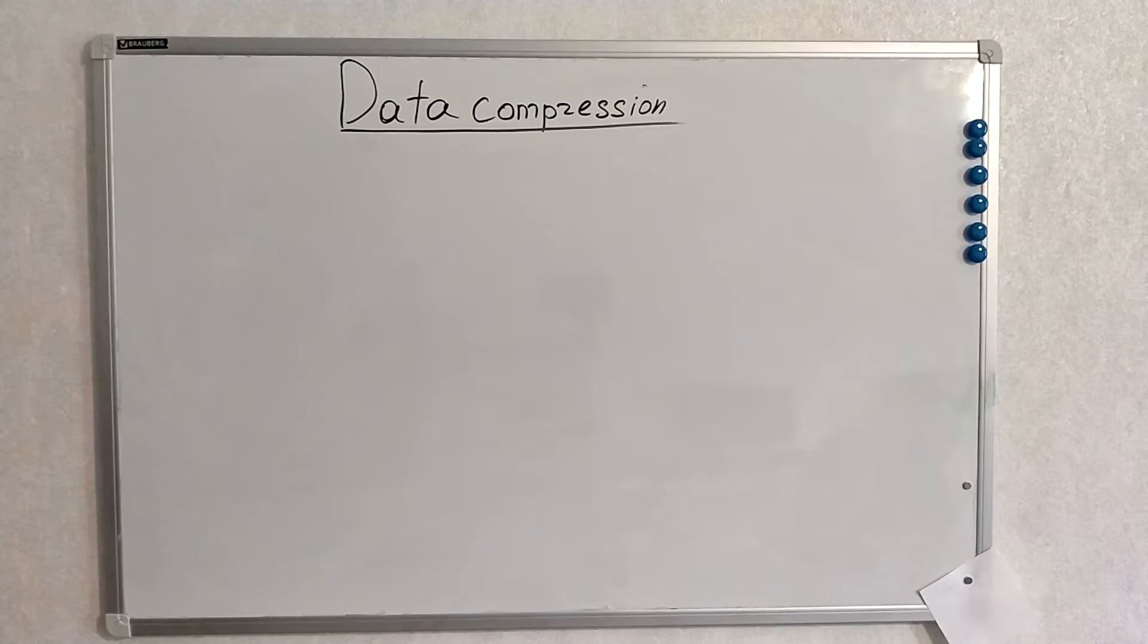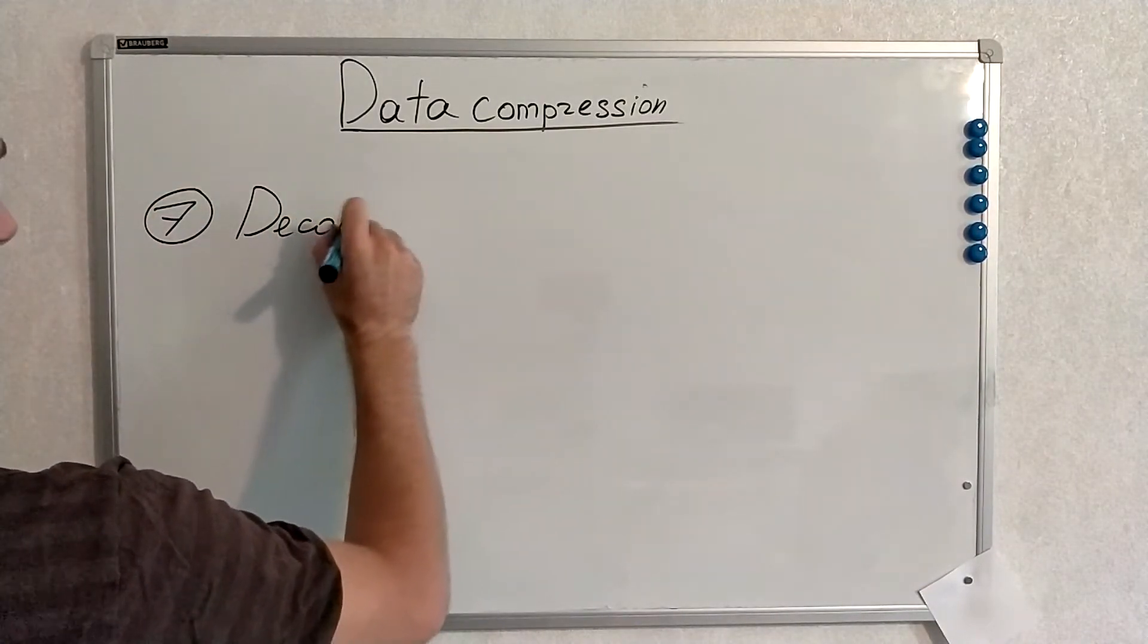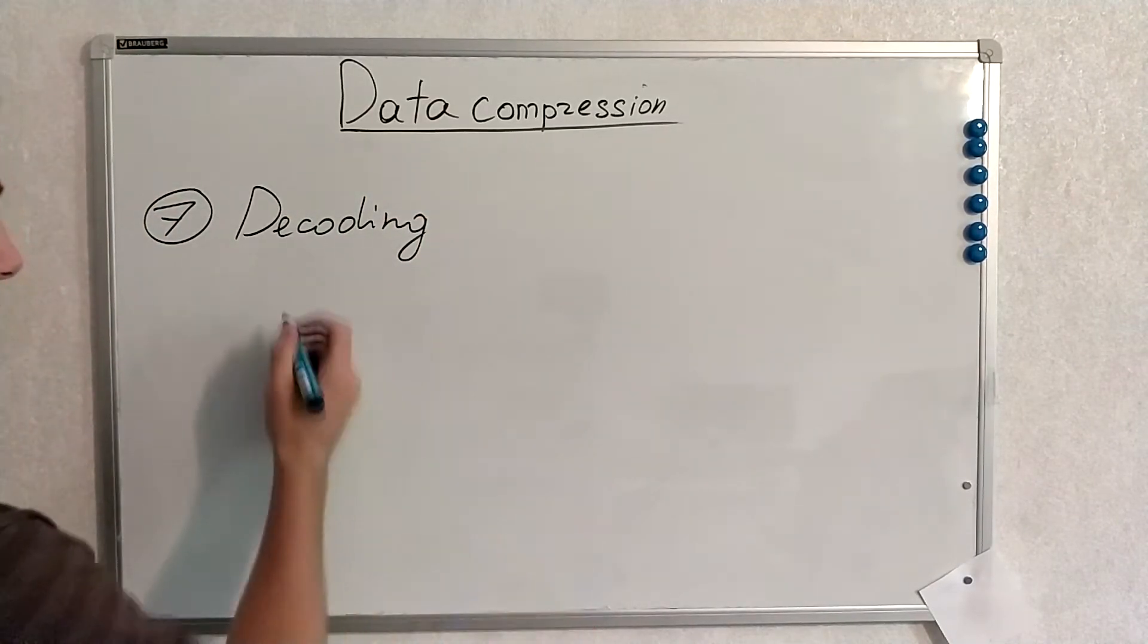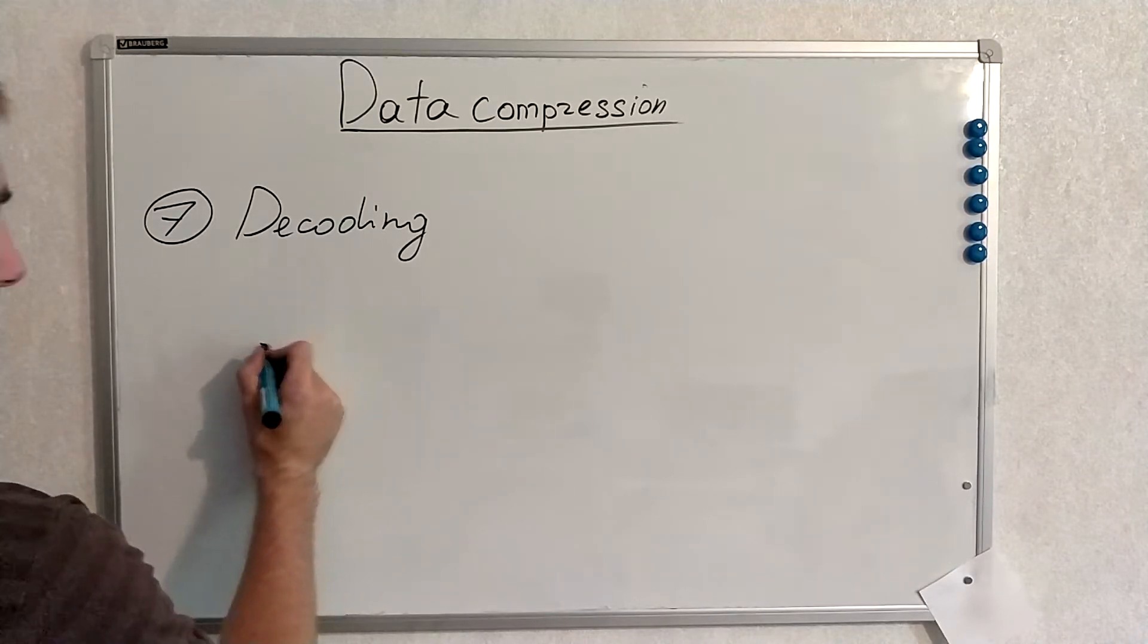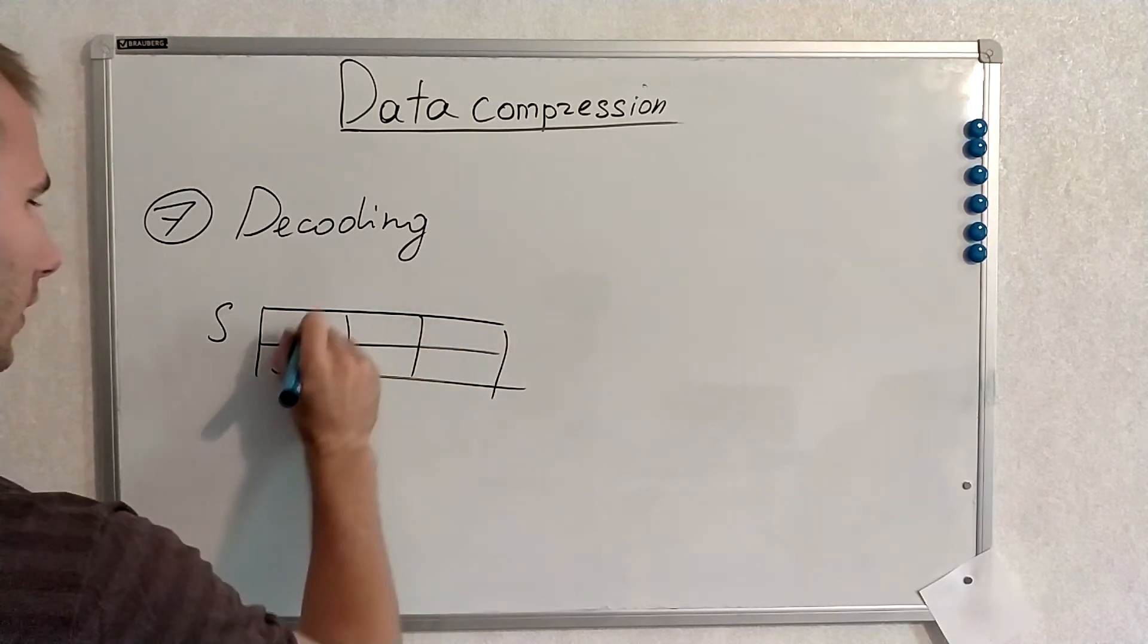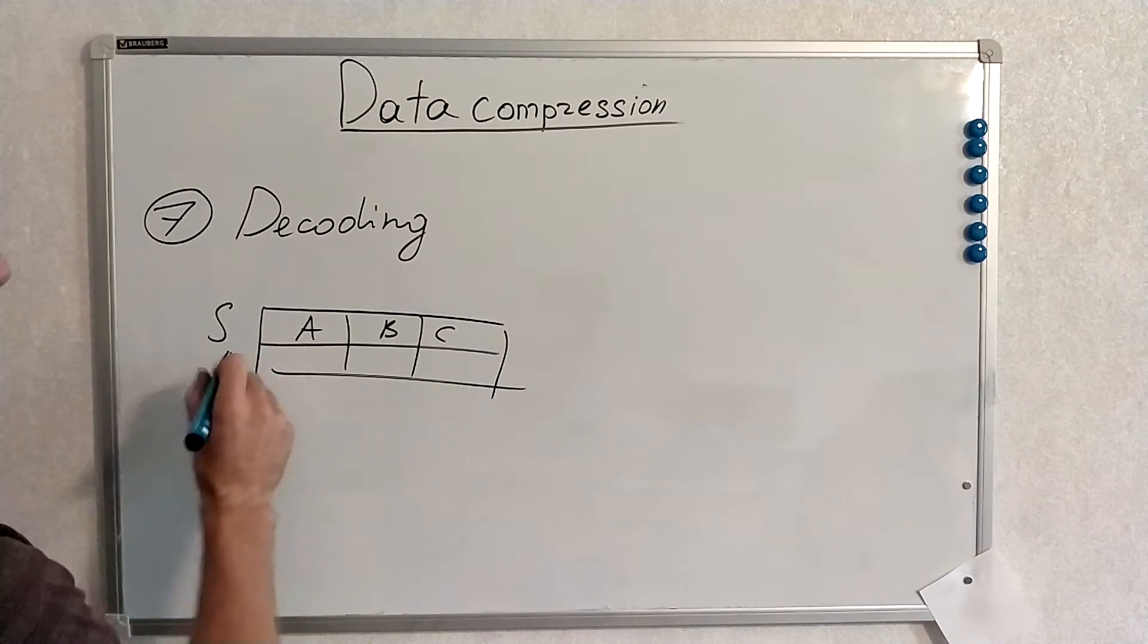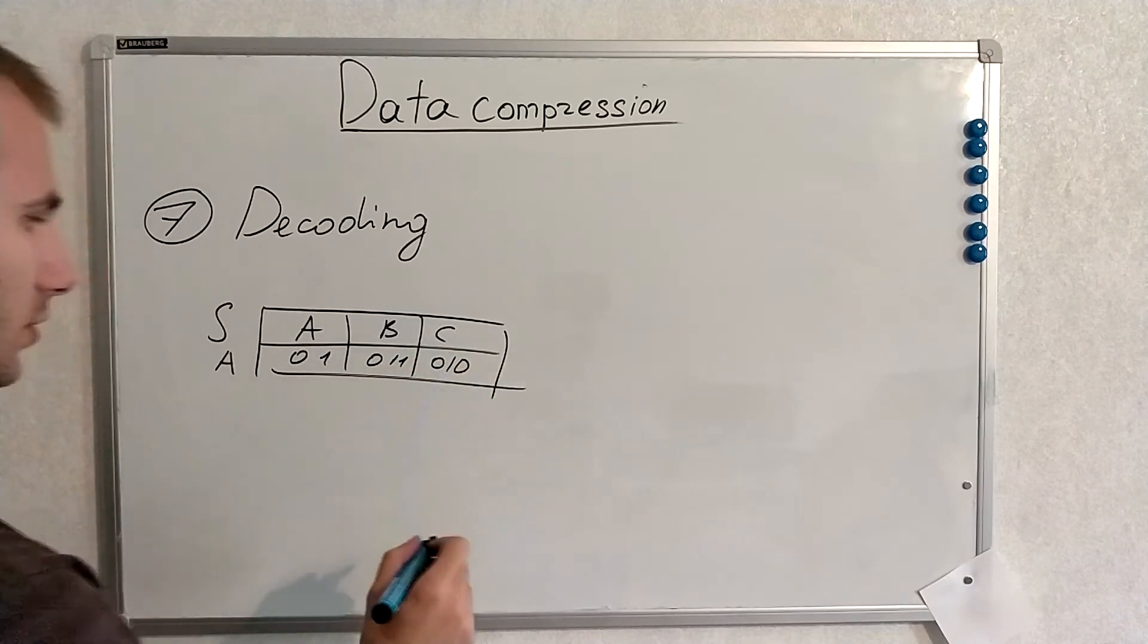And last for today's video it's of course decoding. Decoding is like some process where we decode our source word symbols from code word symbols. Let's say we've got something like that: A B C. This is source and code word alphabet 0 1 0 1 1 0 1 0.